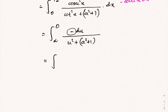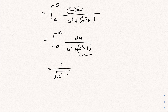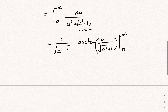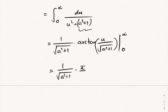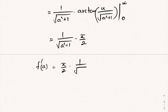Interchanging the lower and upper limits cancels the minus sign, giving the integral from 0 to ∞ of du/(u² + a² + 1). We know this integral is arctan, so we get (1/√(a²+1))·arctan(u/√(a²+1)) evaluated from 0 to ∞. Applying the limits: arctan(∞) = π/2 and arctan(0) = 0, so F'(a) = π/(2√(a²+1)).